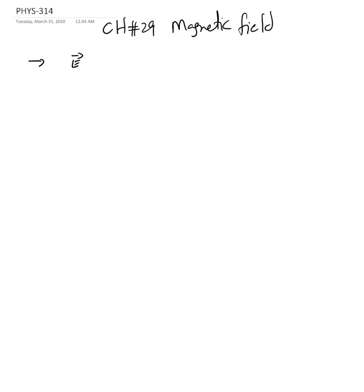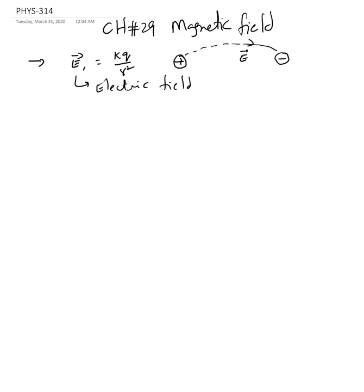The electric field we indicate with E, equal to kq over r squared — it's a vector quantity. The electric field always starts at positive and ends at negative charge, so it has a starting point and ending point. Now the magnetic field is different — it can be created in two ways.